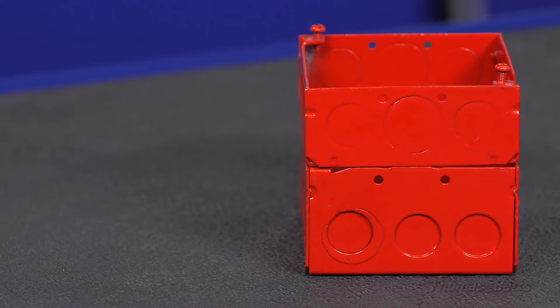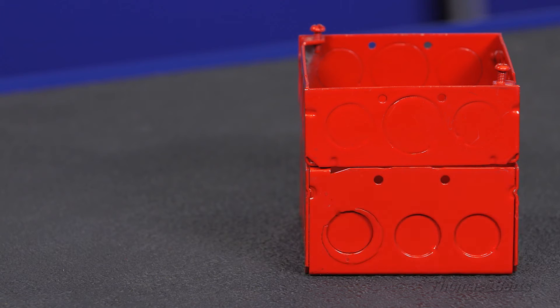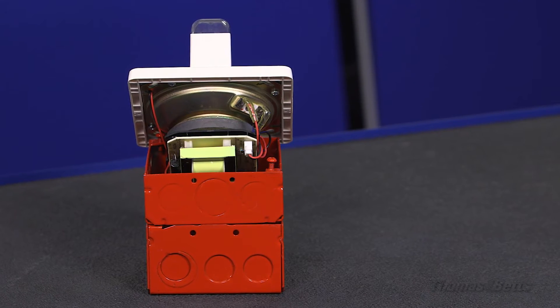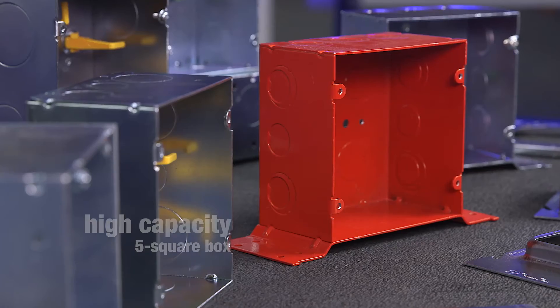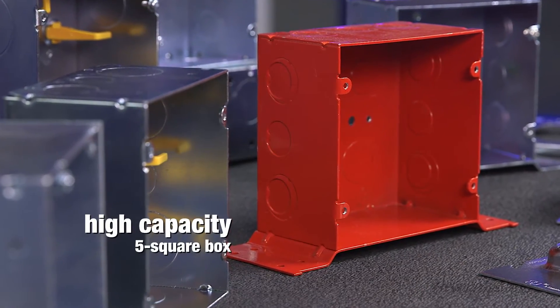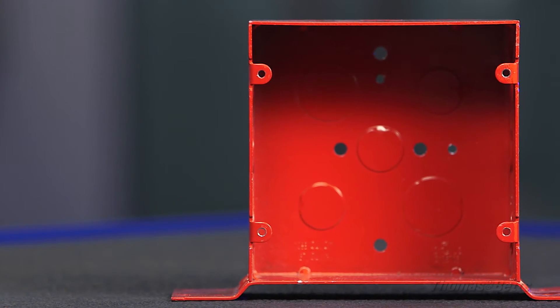For fire alarm applications, a box extension is typically required to enable a standard four square box to accept a large fire alarm device. Even with a box extension, conductors are crowded around the device, leading to frequent ground faults and short circuits. Using the higher capacity five square box can dramatically reduce the troubleshooting time associated with these issues.